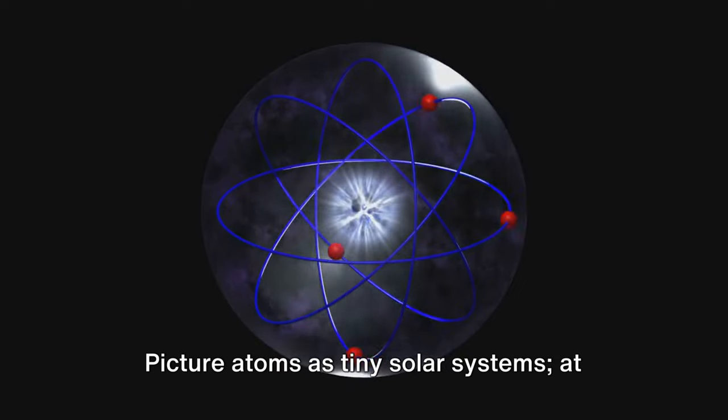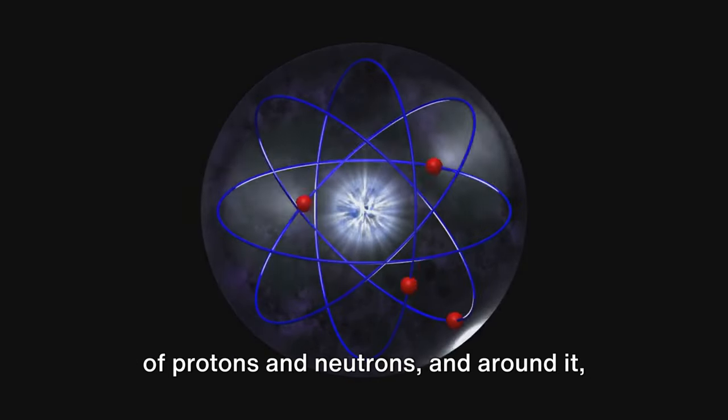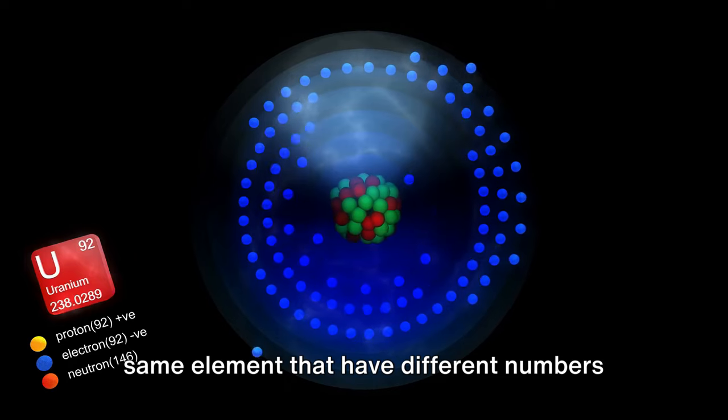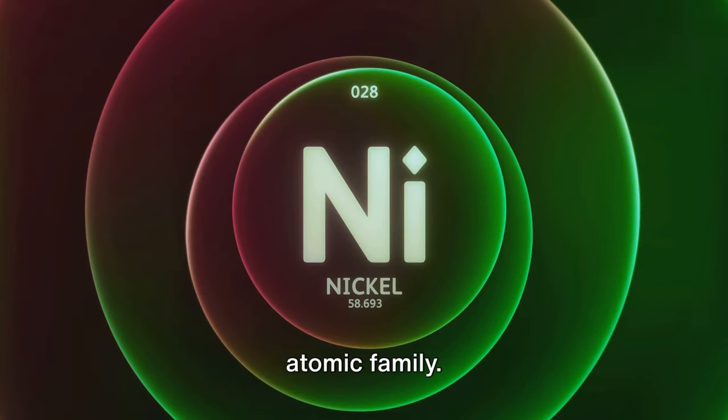Picture atoms as tiny solar systems. At the center you have the nucleus, made up of protons and neutrons, and around it you have electrons in orbit. Now isotopes are simply versions of the same element that have different numbers of neutrons. They're like the quirky cousins in the atomic family.